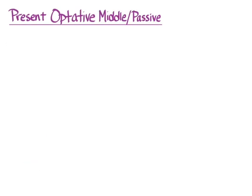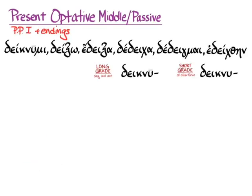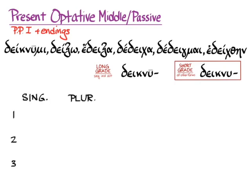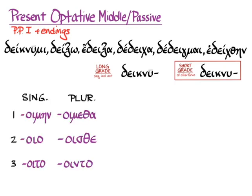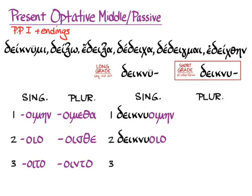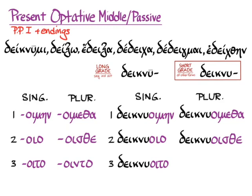In the present optative middle/passive, the same thing happens: short-grade stem, but using thematic optative middle/passive endings rather than athematic ones. We get deiknuoimēn, deiknuoio, deiknuoito, deiknuoimetha, deiknuoisthe, deiknuointo — with recessive accent.